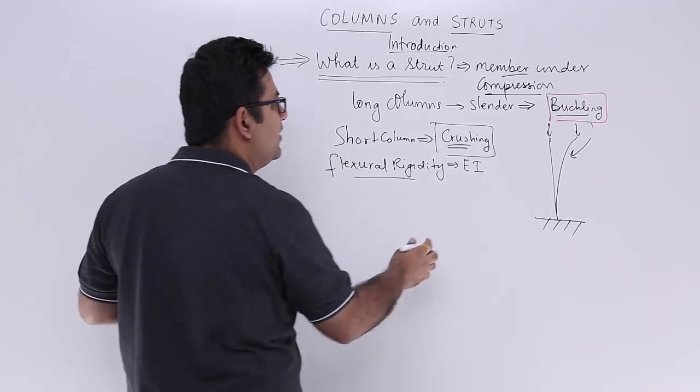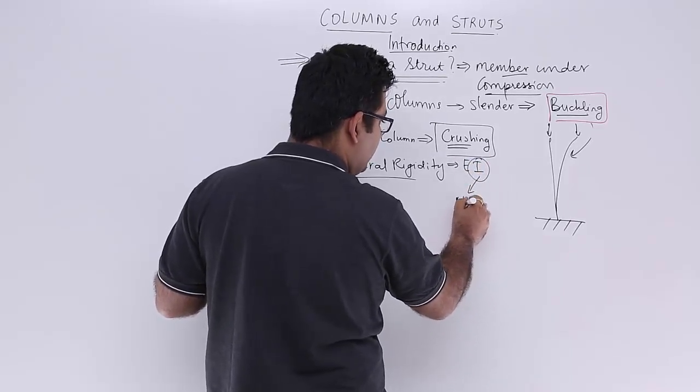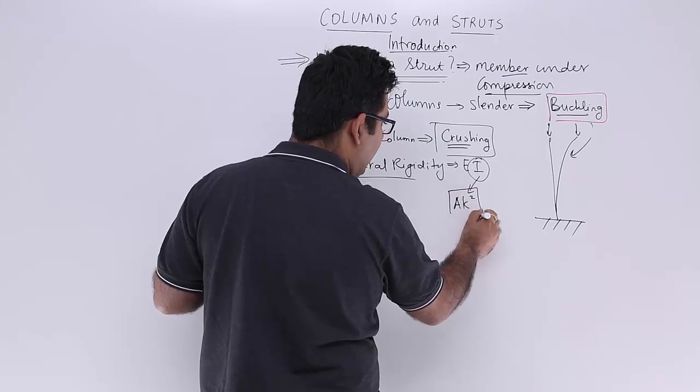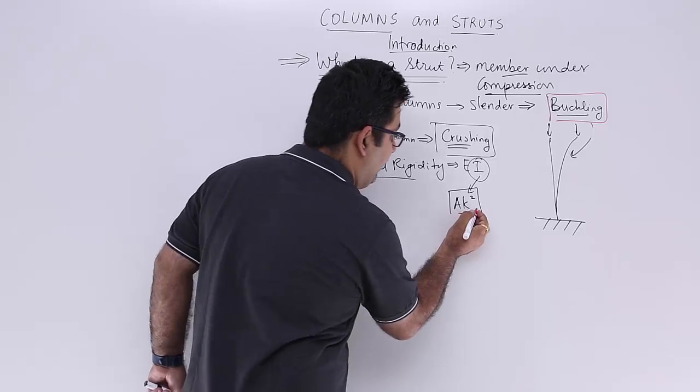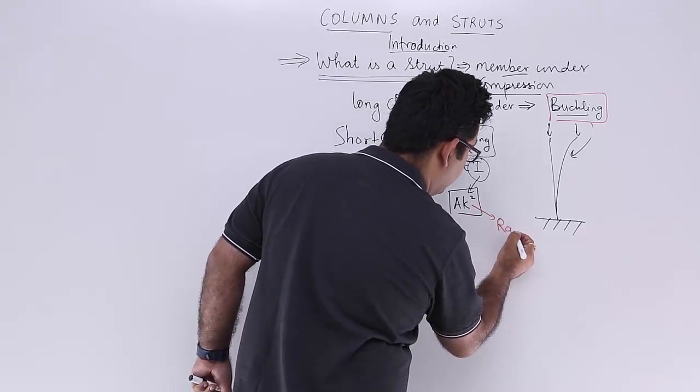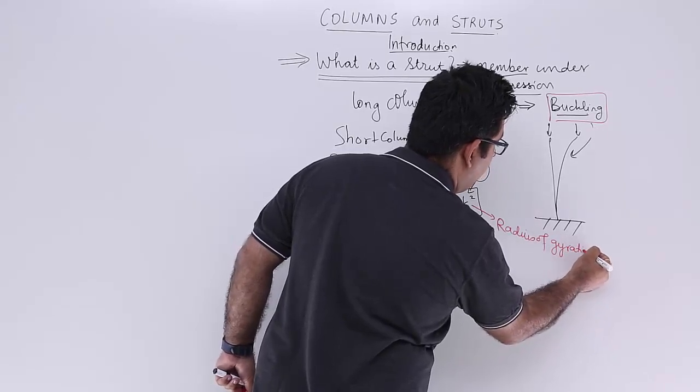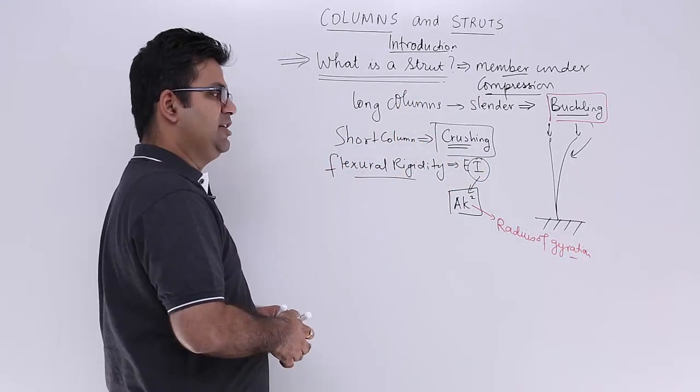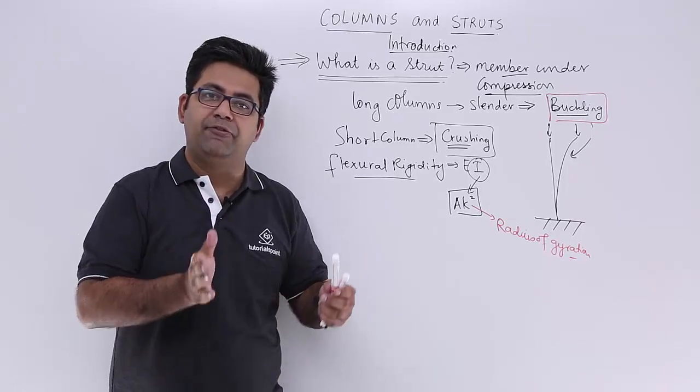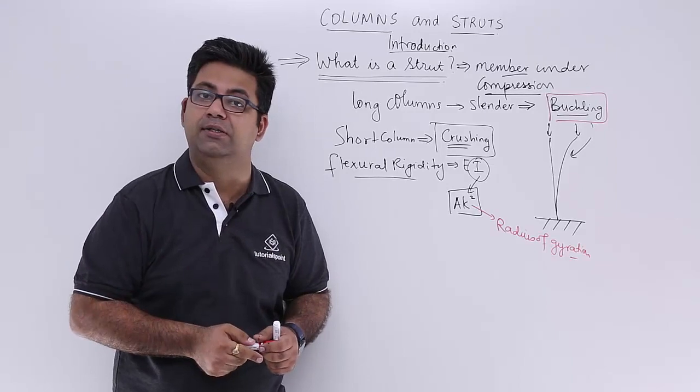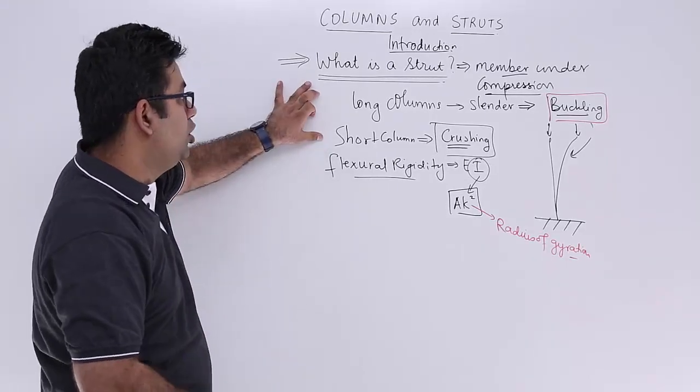If I talk about this I over here, I is nothing but the moment of inertia, which can be written as A times k squared, where k is defined as the radius of gyration. So if you take any cross section, a cross section will have two axes.